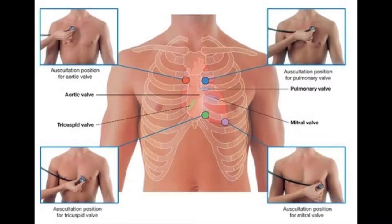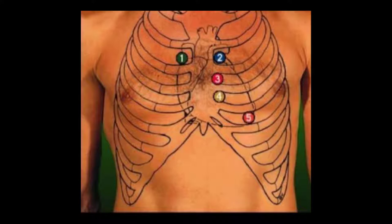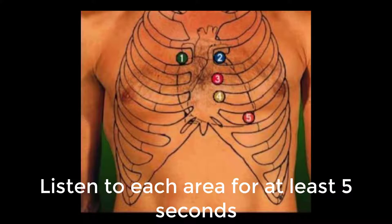Learning the correct technique for auscultation is essential in order to distinguish the normal from the pathologic. It is important to memorize the anatomical landmarks where the stethoscope should be placed on the patient's chest. All cardiac areas must be auscultated in a structured and methodical fashion. Inch your stethoscope to all the areas and listen for at least five seconds while the patient is breathing normally. This requirement is probably one of the most common omissions and pitfalls during the physical examination. Always allow adequate time to listen to the heart sounds.